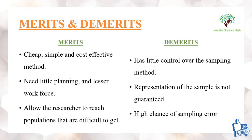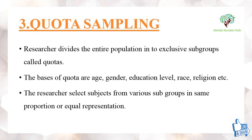Merits of snowball sampling: it is a cheap, simple, and cost-effective method that needs only little planning and a lesser workforce. It allows the researcher to reach populations that are very difficult to access. The demerits are that the researcher has only little control over the sampling method, representation of the sample is not guaranteed, and there is a high chance of sampling error.